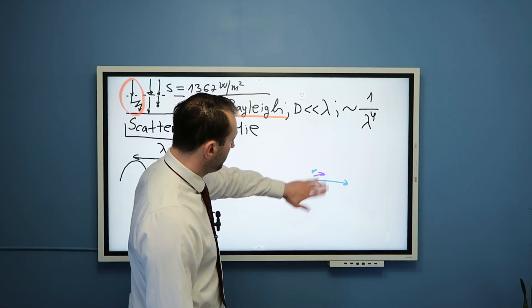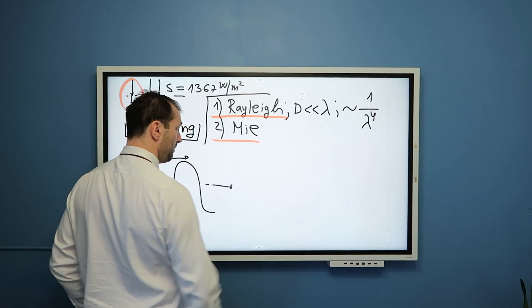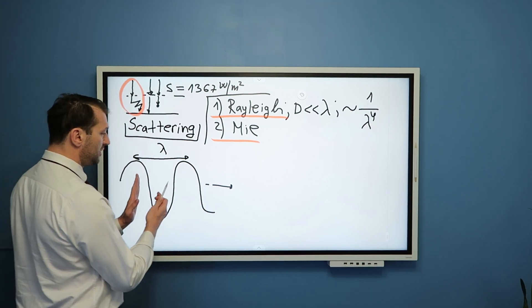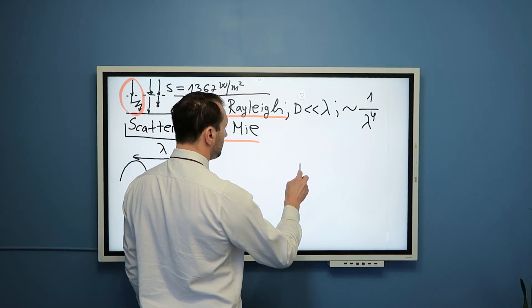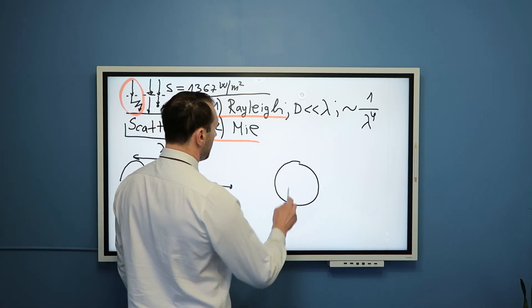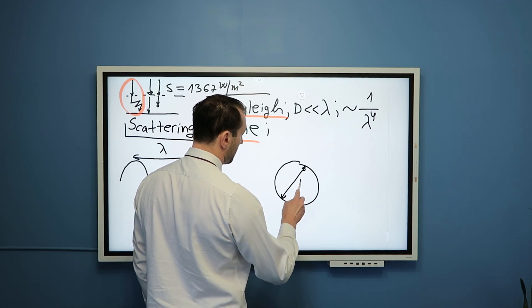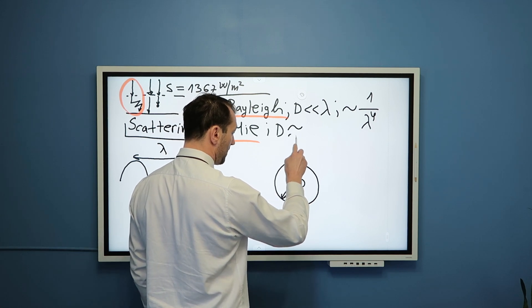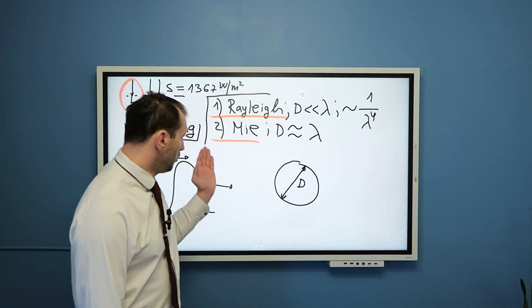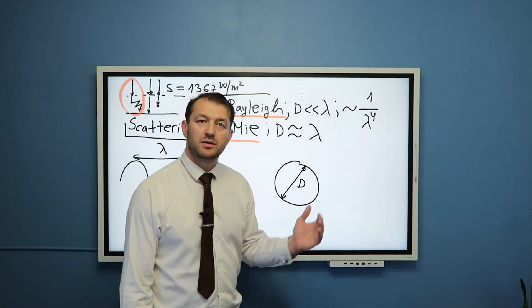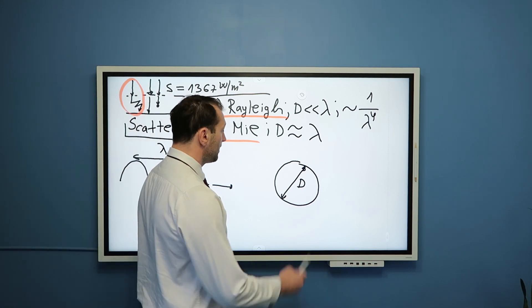Okay. Now, what would be, then, the business of this Mie scattering? Well, if we, again, consider this light moving from left to right, but let's assume this time it is interacting with this particle. And you can see that diameter of this particle is now similar to the wavelength of the incoming light. In other words, you can conclude, therefore, that Mie scattering is the dominant regime of scattering when the size of the particle is similar to the wavelength of incoming light.